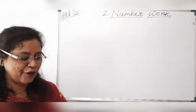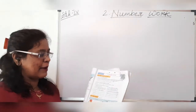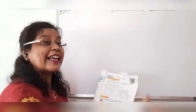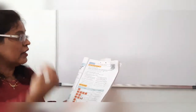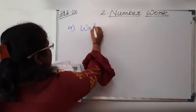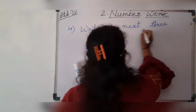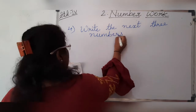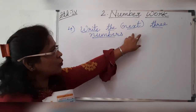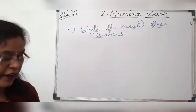I know Maths subject is your favorite, and mine also. Let's start. On page number 7, here is the 4th sum. The question says: write the next 3 numbers. Put more stress on the word 'next.' Next means aage — what comes ahead? Those are the numbers we have to write. So the numbers are given.